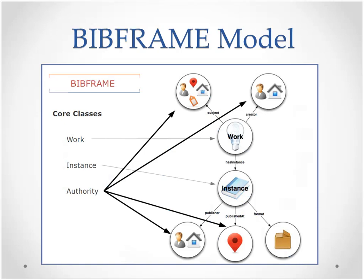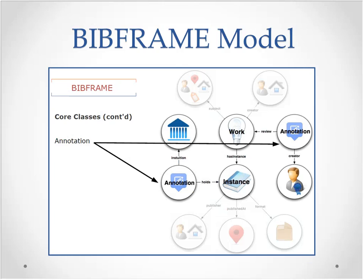The BibFrame model as it currently stands is made up of four core classes. First, there is the Work, defined as a resource reflecting the conceptual essence of a cataloged item. Second is the Instance, defined as a resource reflecting a material embodiment of a work. Linked to both the work and the instance are Authorities — resources that reflect authority concepts such as people, places, organizations, subjects, and so on. The fourth core class is Annotations: additional information about a resource, such as a library's holding information, book cover images, a related review, abstract, or excerpt. As you can see from the model, it appears to be a simplified, less hierarchical version of FRBR — rather than having FRBR's four levels (work, expression, manifestation, and item), it has condensed these into two: works and instances.